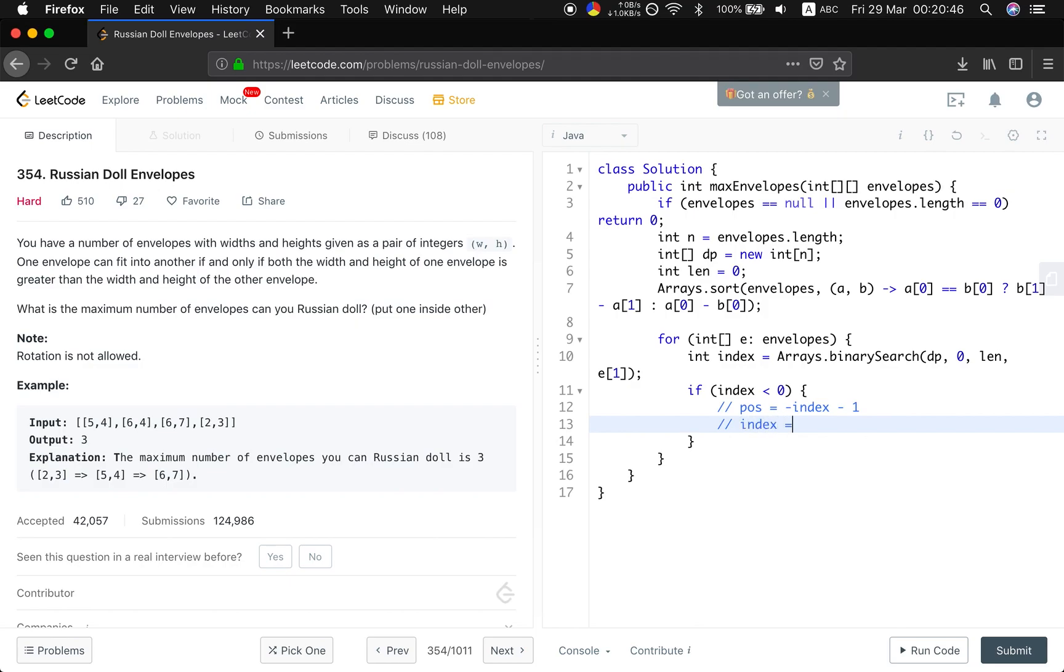The position we need to insert the element should equal the minus index and minus 1. So if we want to get the correct index, it should be the position plus 1 and get its negative value. So in this case, we update the index to the negative index plus 1.